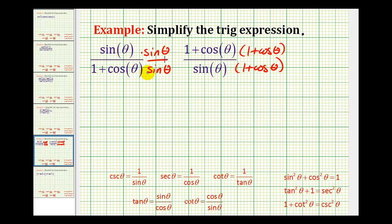You need to be a little bit careful here because this is the quantity one plus cosine theta times sine theta and over here we have the quantity one plus cosine theta times the quantity one plus cosine theta. So now that we have a common denominator we can combine these fractions.